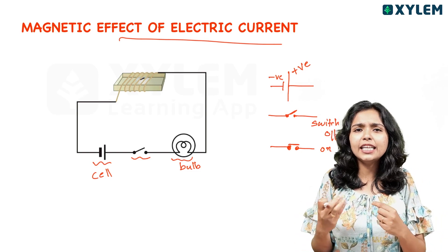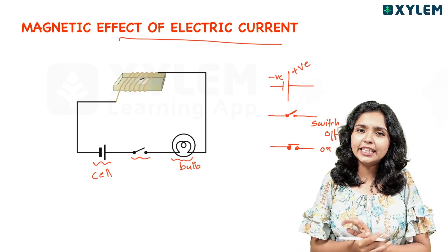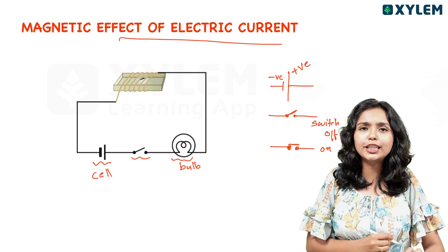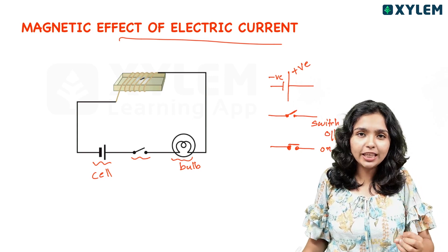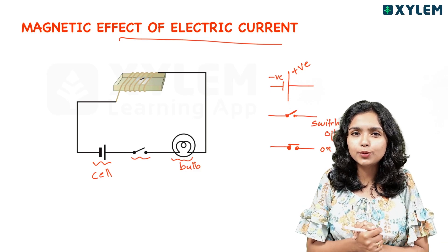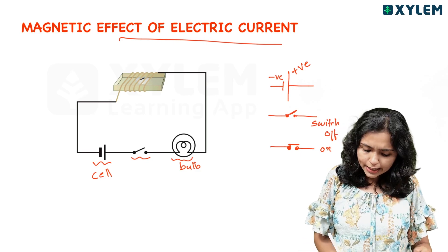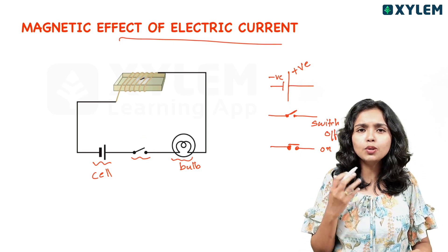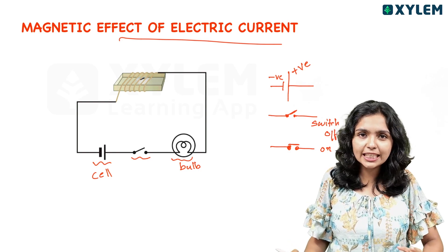Let's use a conductor wire. Let's use a copper wire. We have to connect the cell and the bulb. We have to connect the compass needle. We are going to switch on and off the circuit.